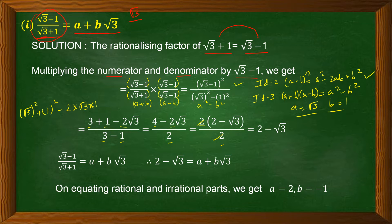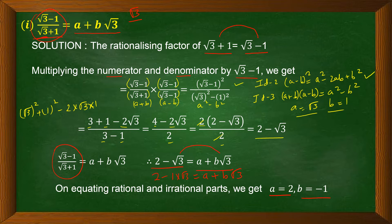We have solved the left-hand side, which equals 2 − √3. The right-hand side is a + b√3. We can write 2 − √3 as 2 + (−1)·√3, so comparing with a + b√3, we find a = 2 and b = −1. The value of a is 2 and the value of b is −1.